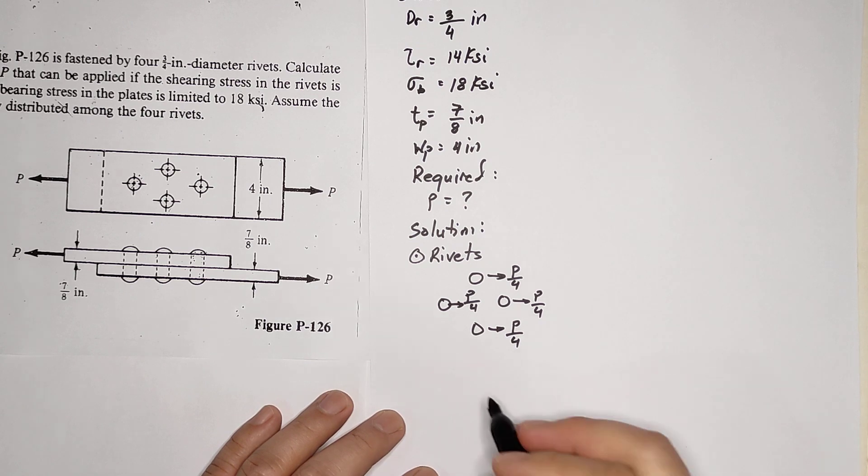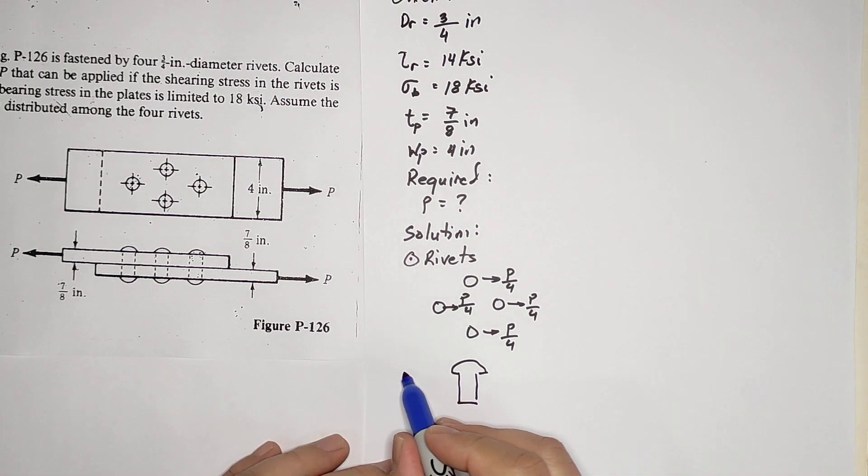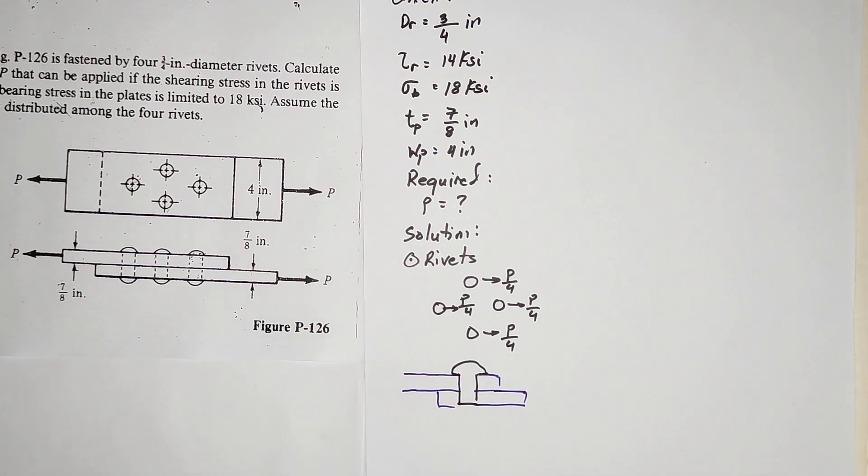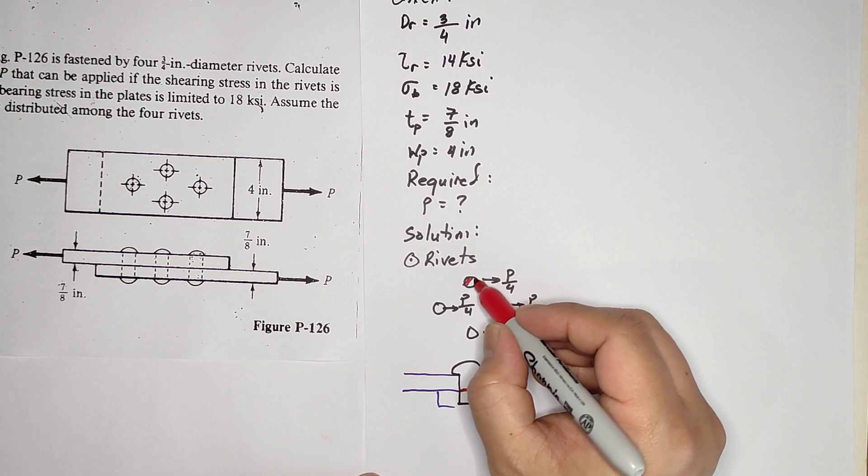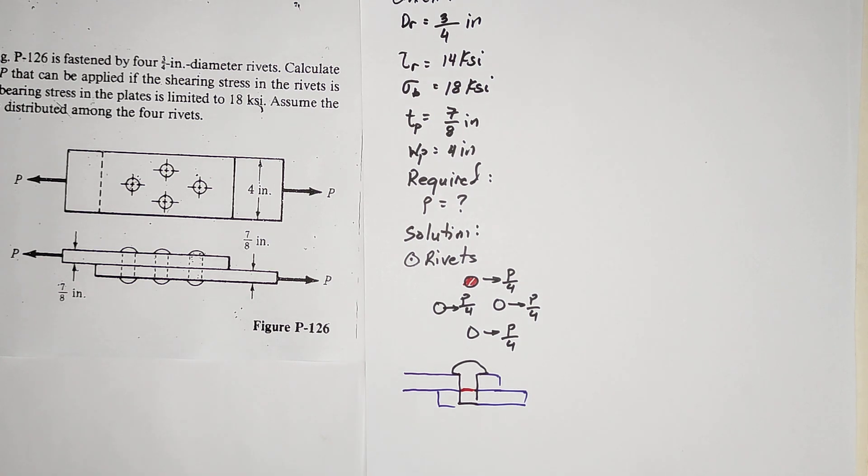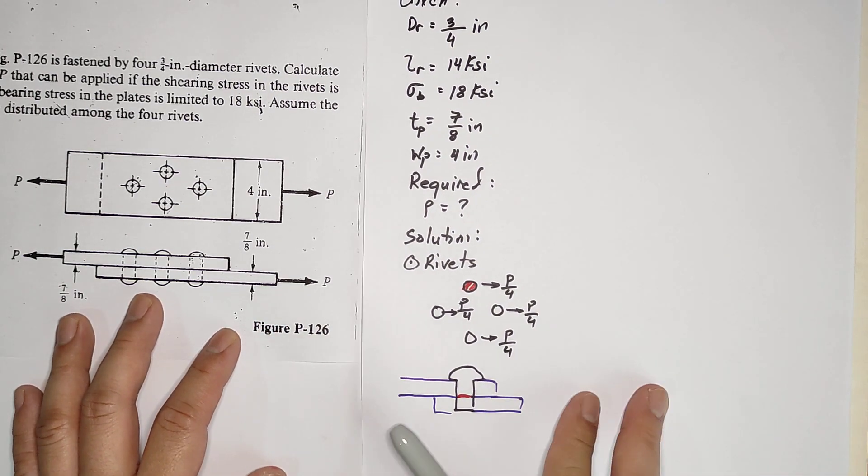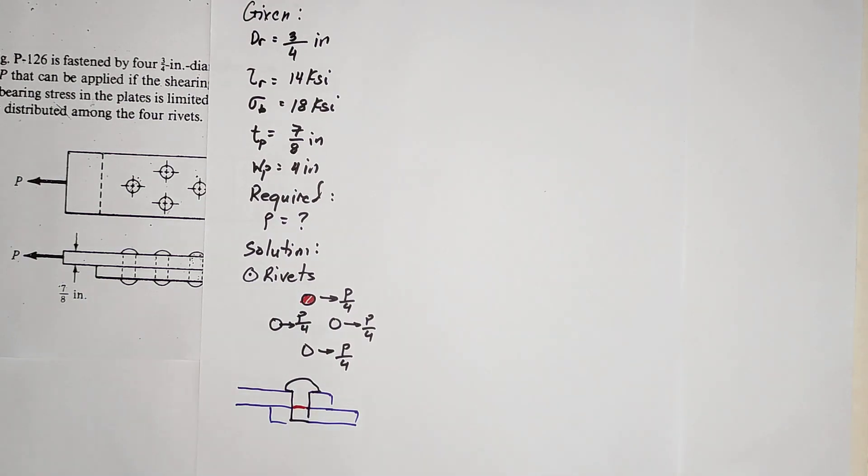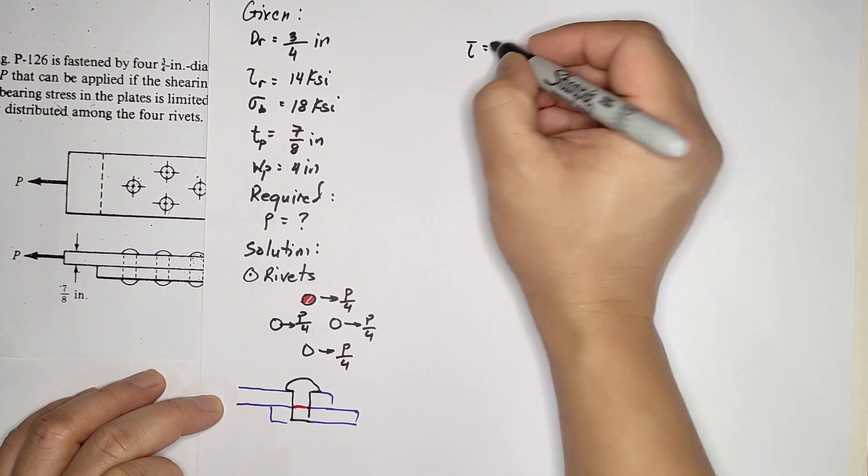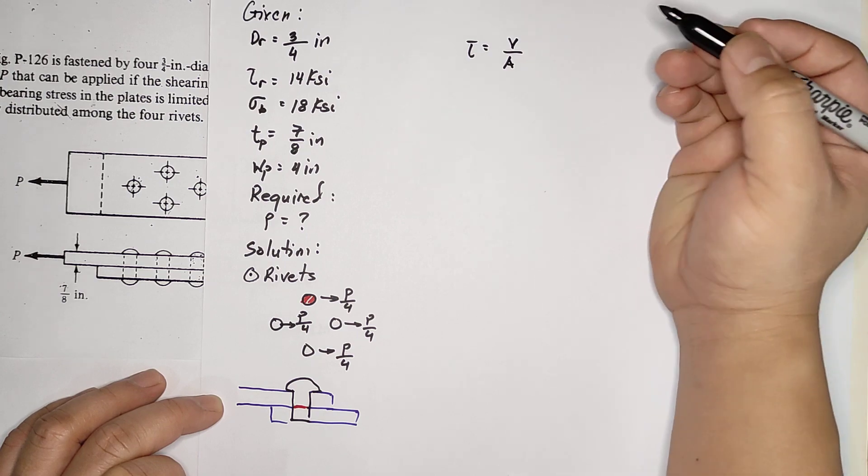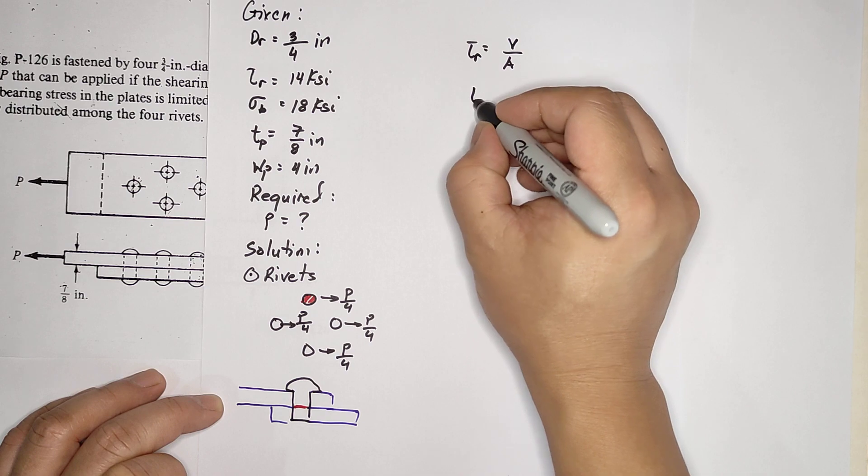Let's focus on one rivet. Here's the rivet and here's the plate. This rivet experiences shear in this part, and the shear area is this red part - that is a circle. For the shear you have the equation: τ = V/A, that is the shearing area.